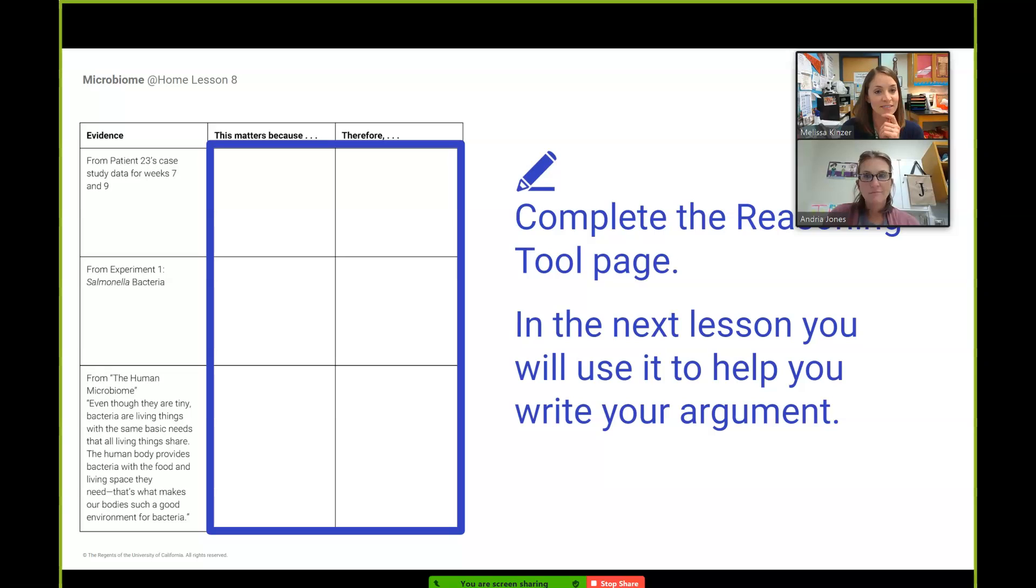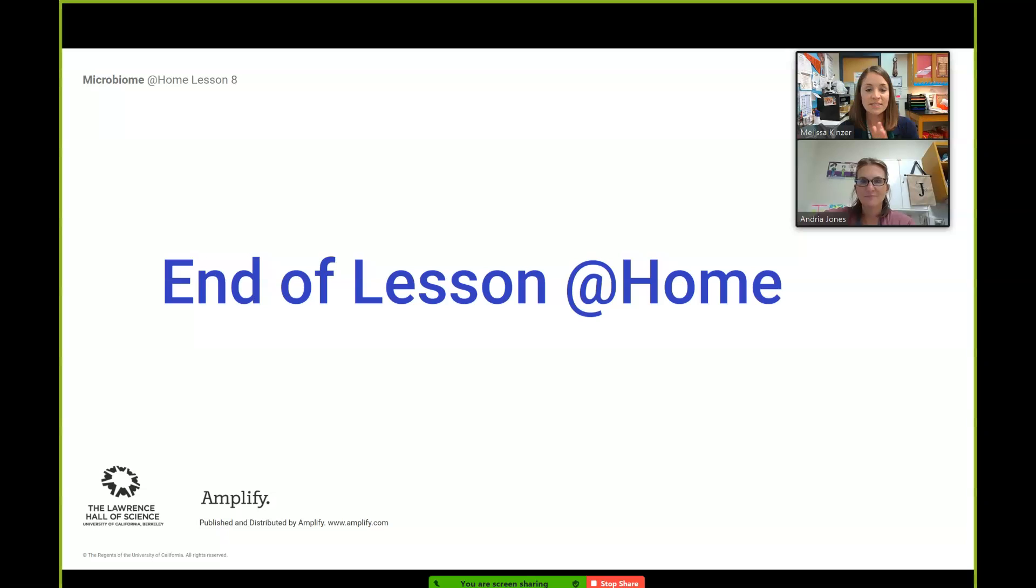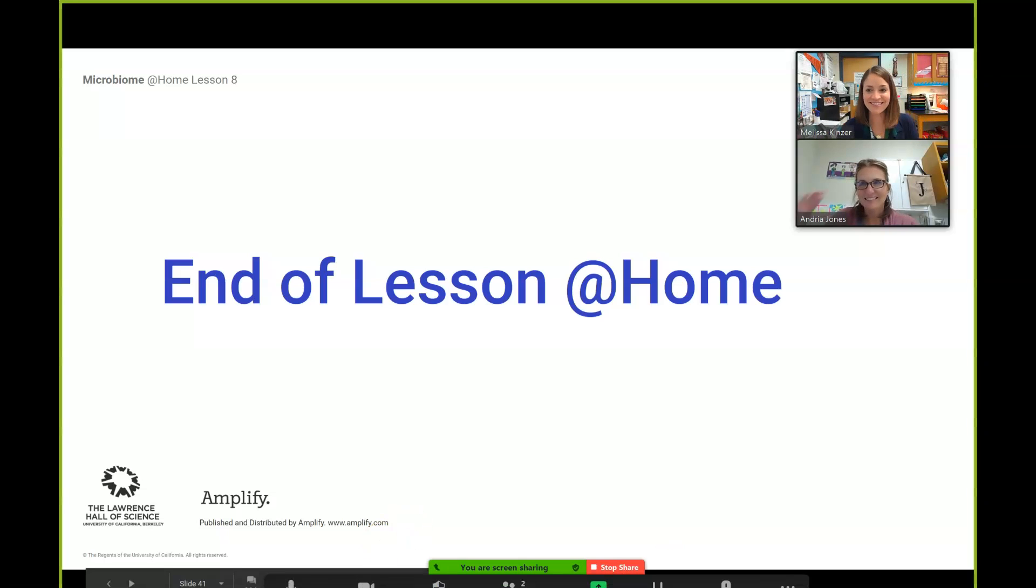Google does not have the information about patient 23. This stuff is so specific that everything you need is in Amplify. We're going to put together another beautiful package of Google slides with all the articles listed out along with the graphics and the experiment so that it's easier access for you guys. That's the end of today's lesson. Your job at home is to fill in this reasoning tool, find two more additional pieces of evidence. Have a great day.